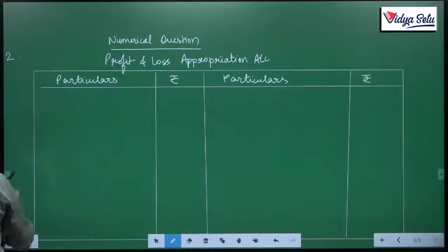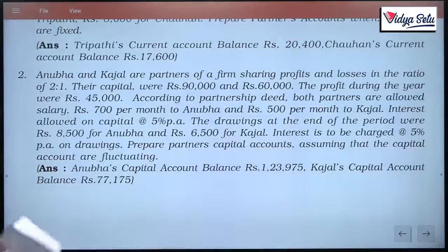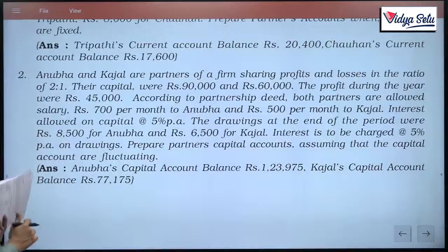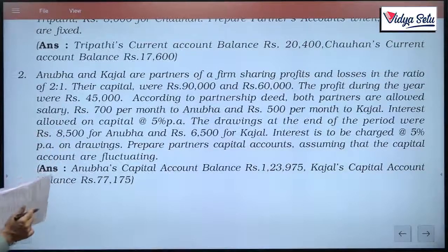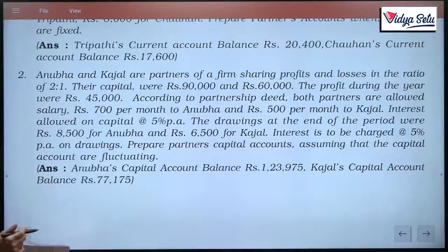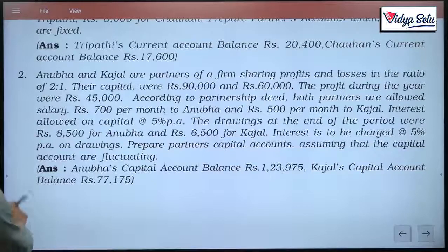Partner's name: Anubha and Kajal. By this time I generally forget the question. The capitals 90,000, 60,000 let us bring them. 2 to 1 is the ratio, 700 and 500 is the salary, 45,000 is the profit, 5 percent capital interest, 8,500 and 6,500 were the drawings, 5 percent interest on drawings.